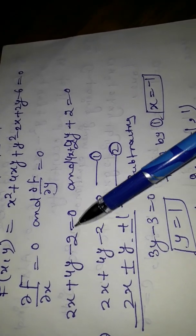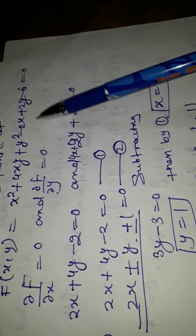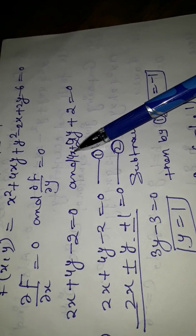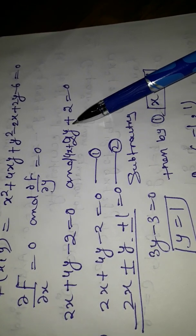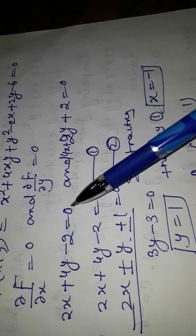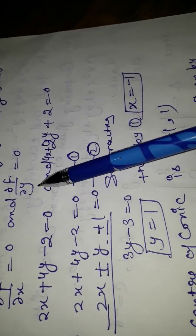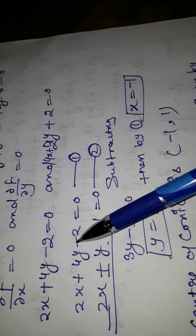Similarly, differentiating with respect to y gives 4x + 2y + 2 = 0. Solving these two equations allows us to calculate the values of x and y.